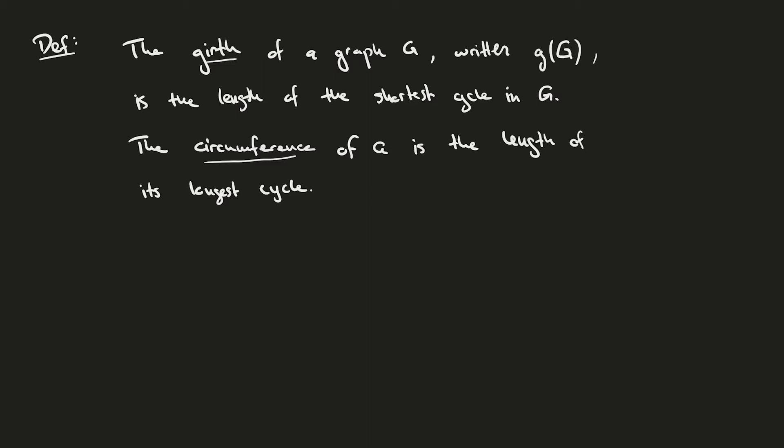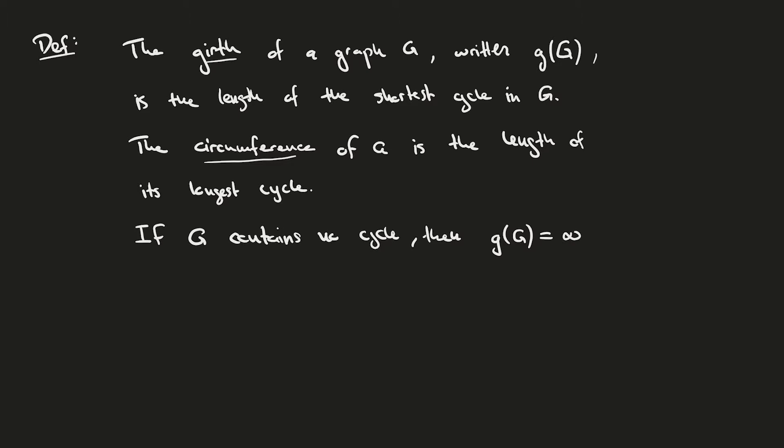It may be the case that G doesn't contain any cycles, so in particular it won't have a shortest and longest cycle, so we need to set some default values for these parameters in that case. If G contains no cycles, then the girth of G is equal to infinity, and the circumference of G is set to 0.